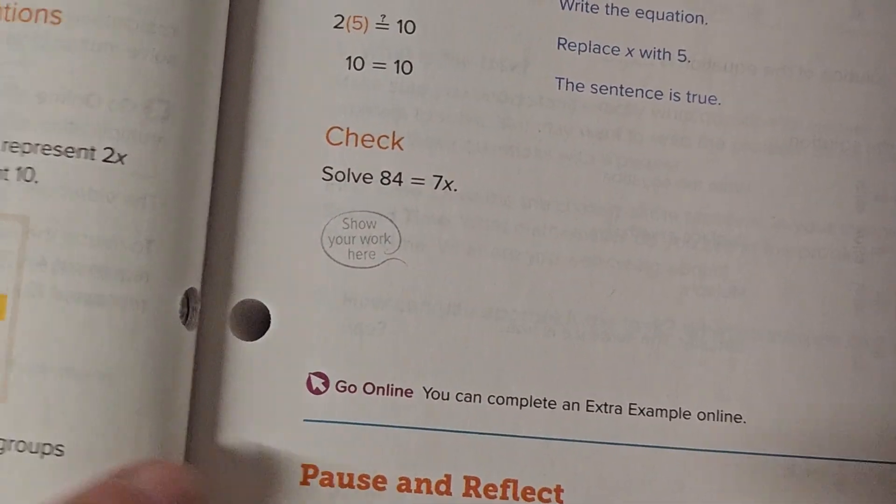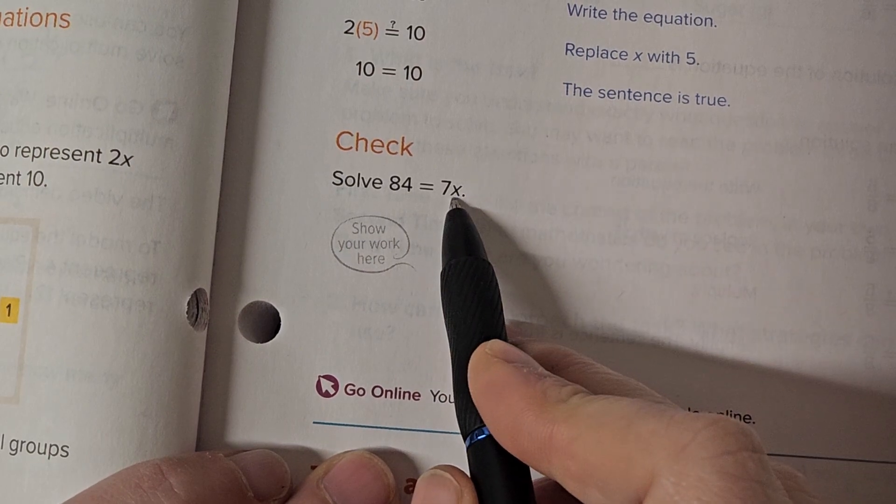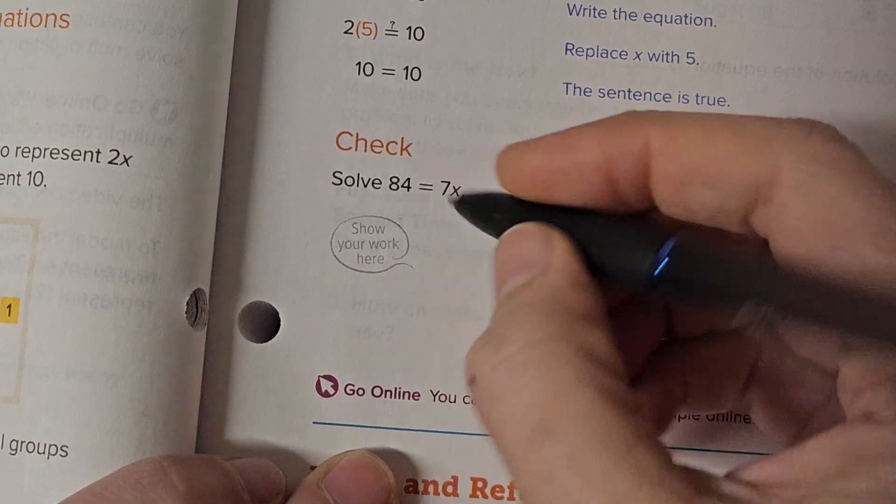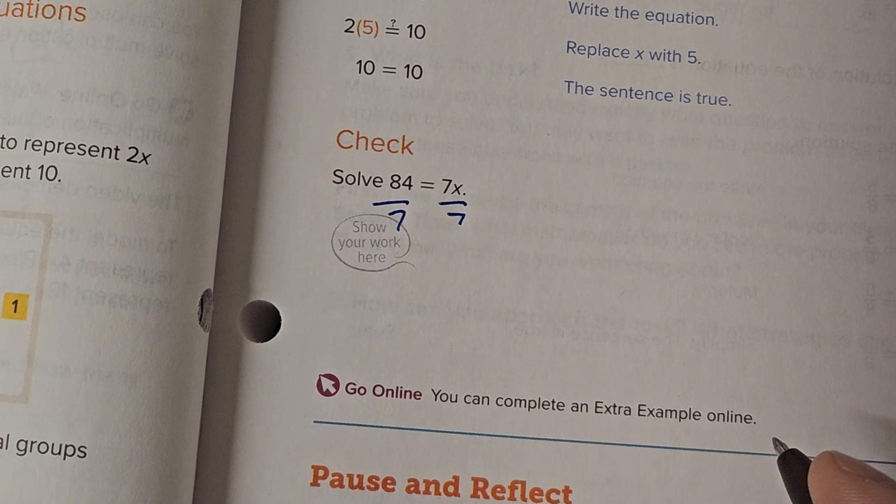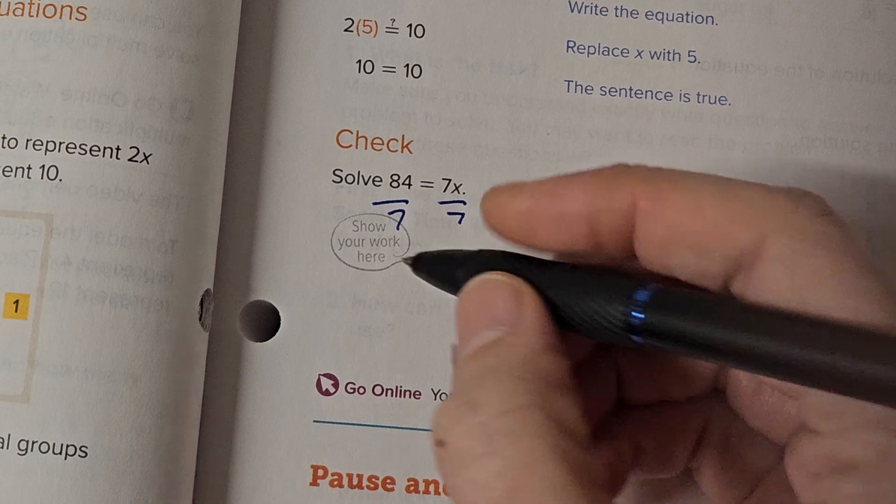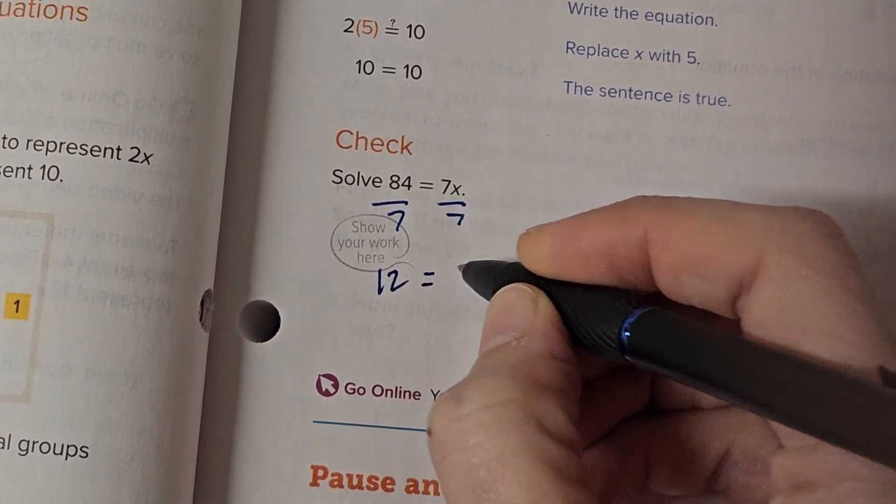OK, let's try and solve this one. 84 equals 7 times x. So what's happening to the variable? It's being timesed by 7. What's the inverse of that? Divide 7. 84 divided by 7, I think, is 12. It is 12. And 7x divided by 7 is x.